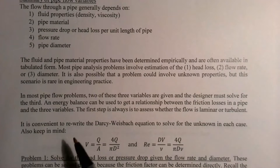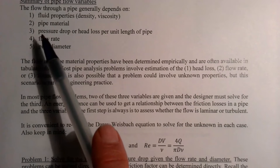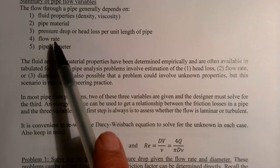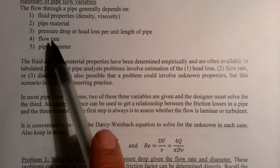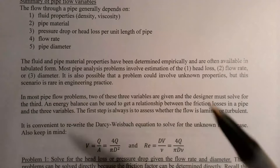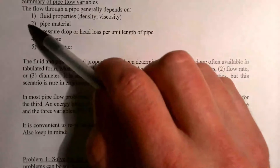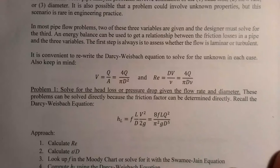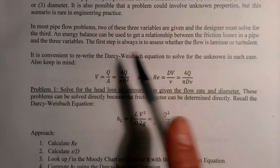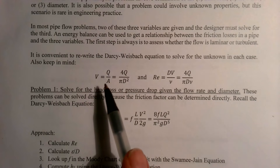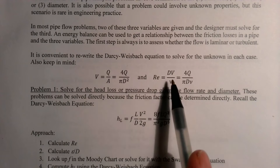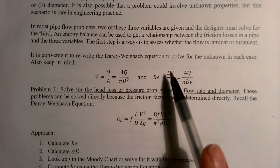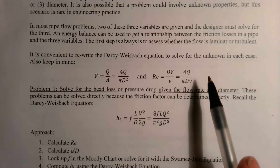In problems, we'll often know some information and need to solve for something else — like knowing we're working with water and how much flow we need, and solving for diameter. Or we have a pipe and want to know how much flow we'll get. Typically we know two of three variables and solve for the last. We'll write the Darcy-Weisbach equation and, if worried about flow rate, we need velocity to get the Reynolds number, combining the flow rate and area equations to get average velocity.